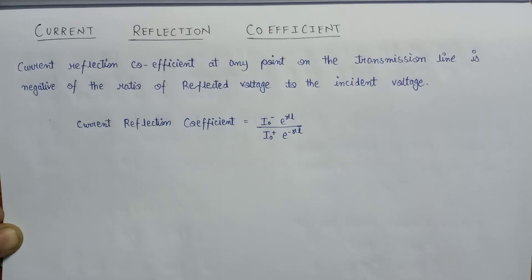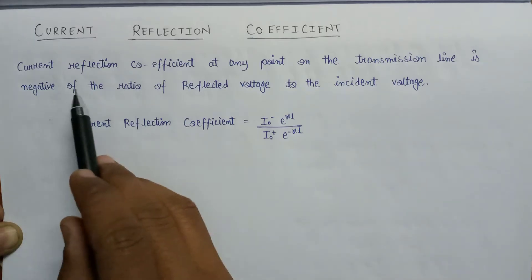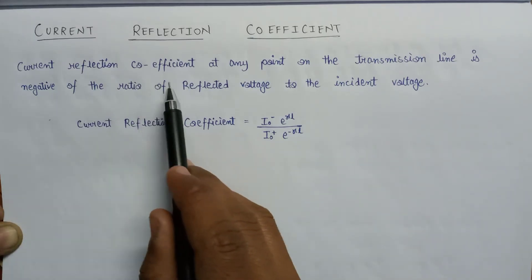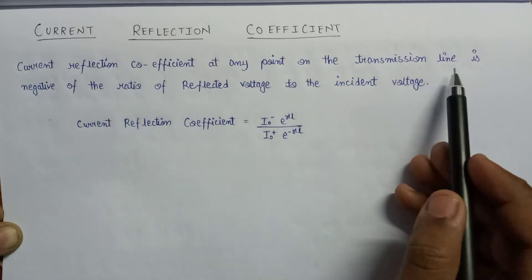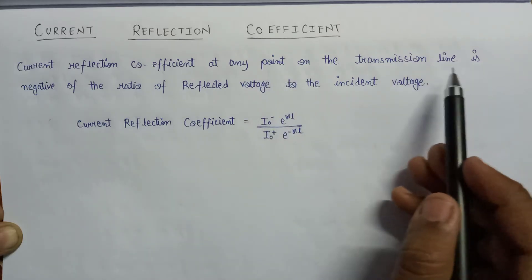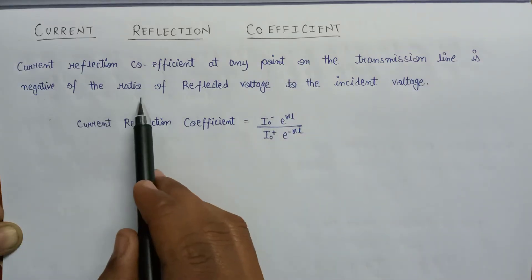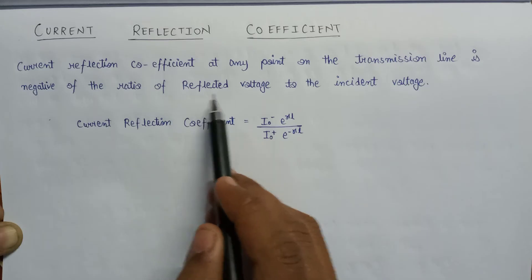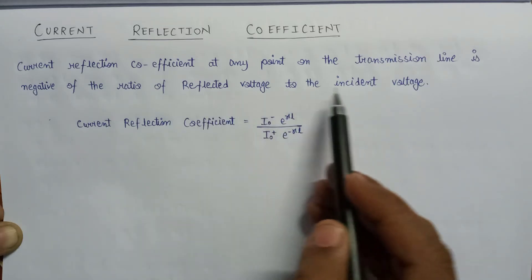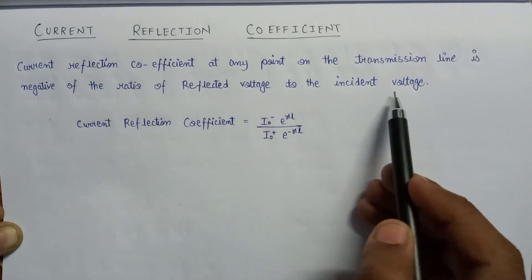Welcome. In this lecture we are going to learn about the current reflection coefficient. The current reflection coefficient is defined at any point on the transmission line as the negative of the ratio of reflected voltage to the incident voltage.